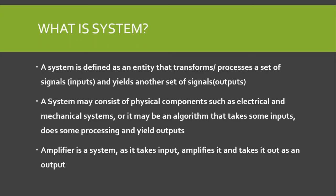A system is defined as an entity that transforms or processes a set of input signals and yields another set of output signals. A system has both hardware and software realizations — it may consist of physical components such as electrical and mechanical systems, or it may be an algorithm that takes inputs, does some processing, and yields an output. An example of a system is an amplifier, because it takes an input, amplifies it, and yields an output.